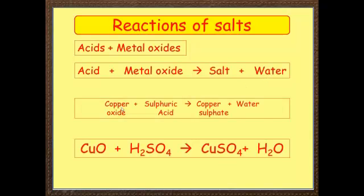For example, copper oxide is a metal oxide. Sulfuric acid is our acid. And that will give us copper sulfate. You know that because it's sulfuric acid plus water. The equation: CuO, H2SO4, CuSO4, H2O.